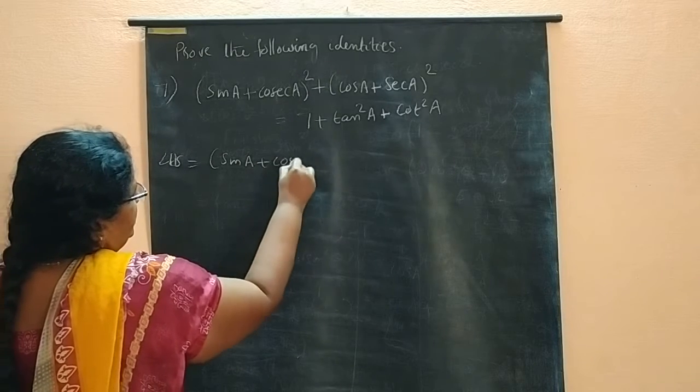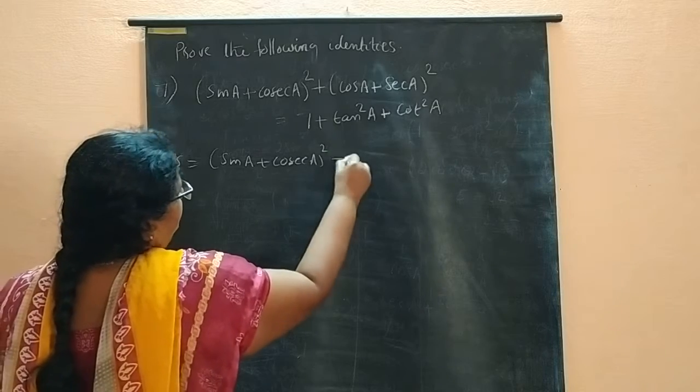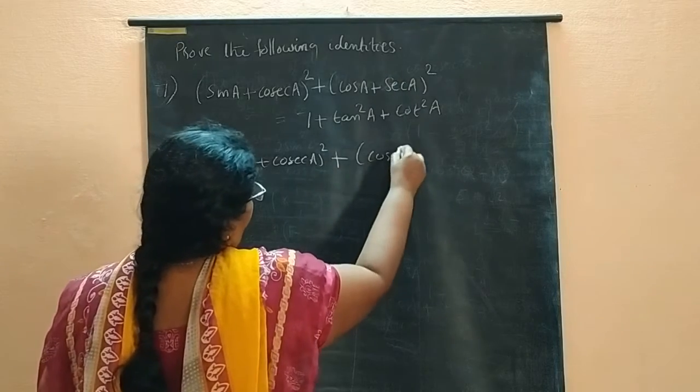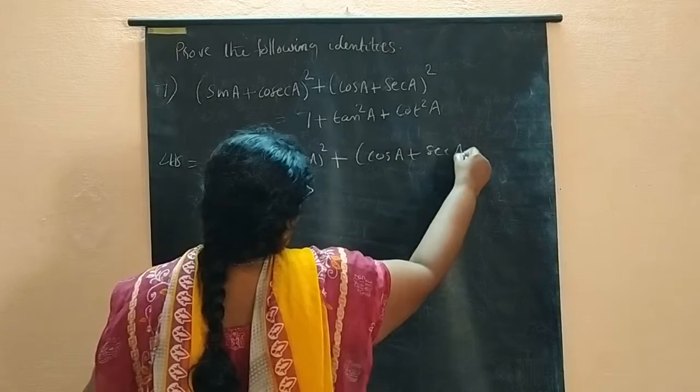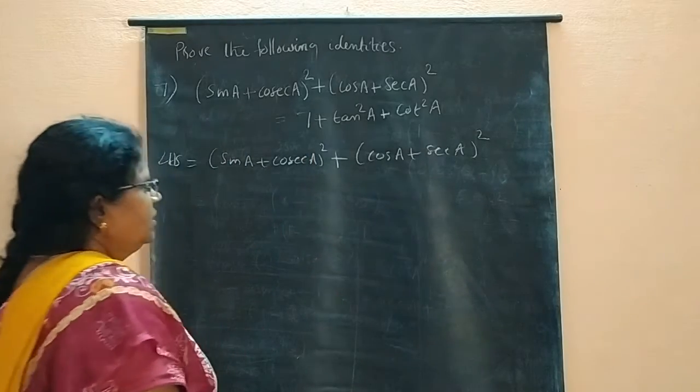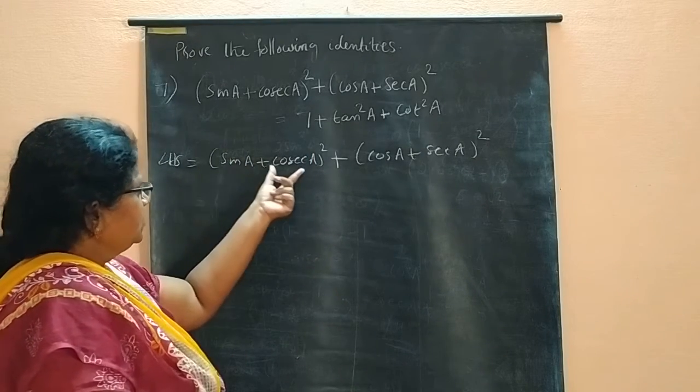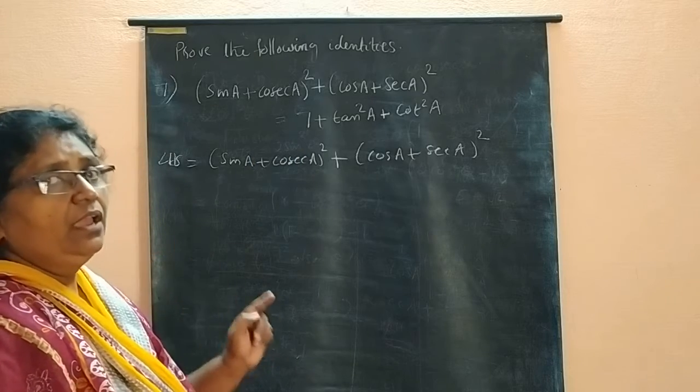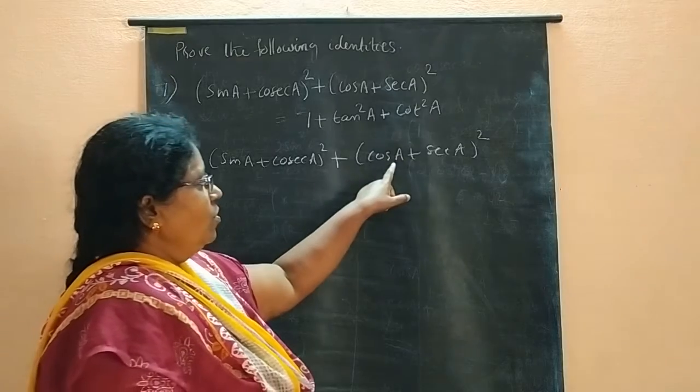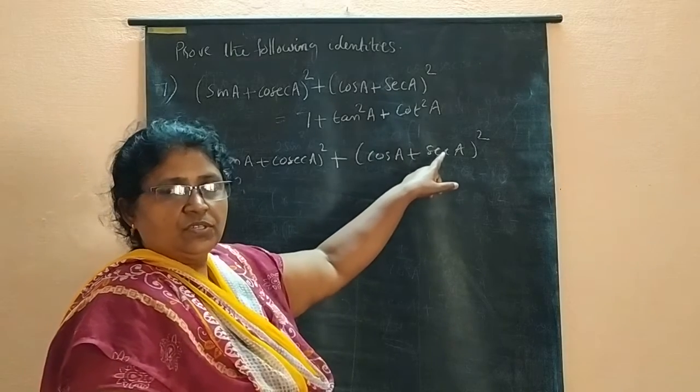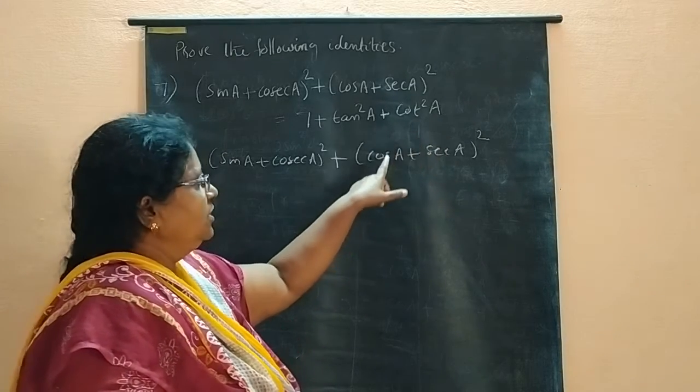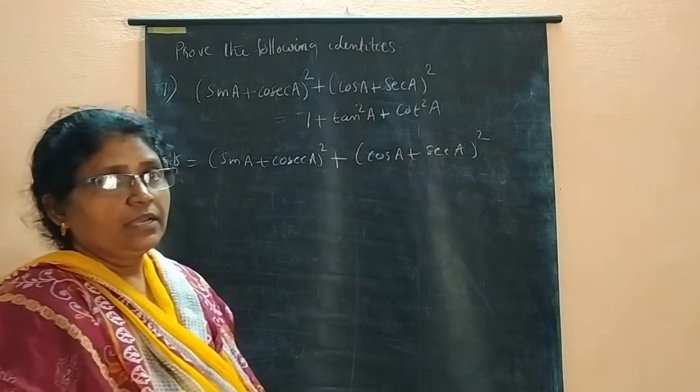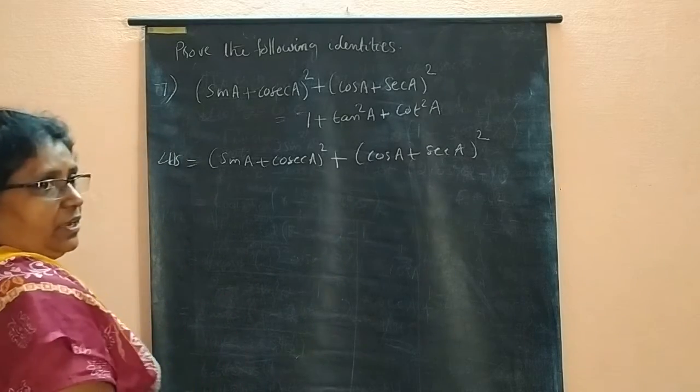LHS is sin A plus cosec A whole square plus cos A plus sec A whole square. Now, you see sin A plus cosec A whole square. It is in which form? A plus B whole square? Cos A plus sec A whole square. It is also in A plus B whole square.